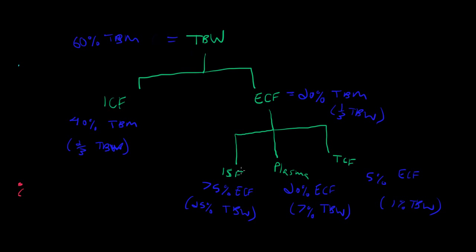So you see that 75 plus 20 plus 5 equals 100% of ECF. So this interstitial fluid plus plasma plus transcellular fluid equals the total of extracellular fluid. And you can do the math to calculate the percentages of total body water.